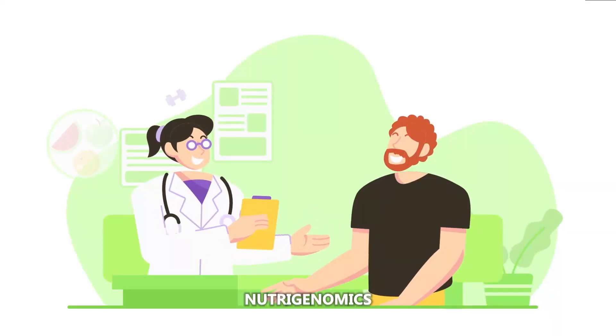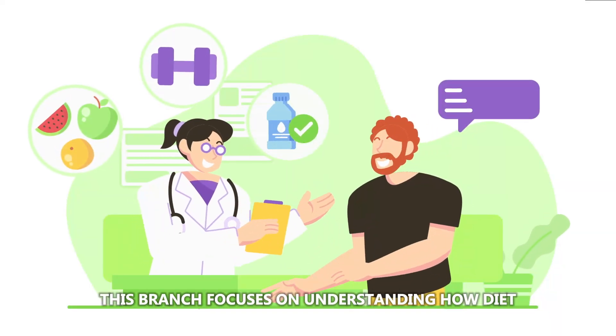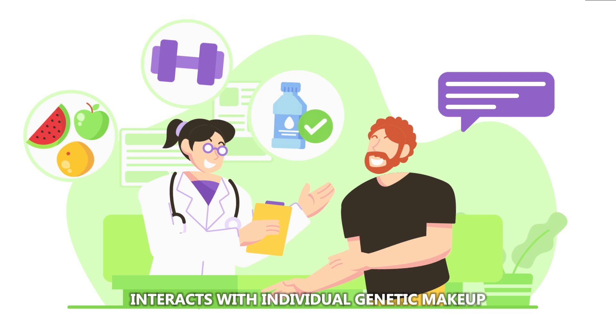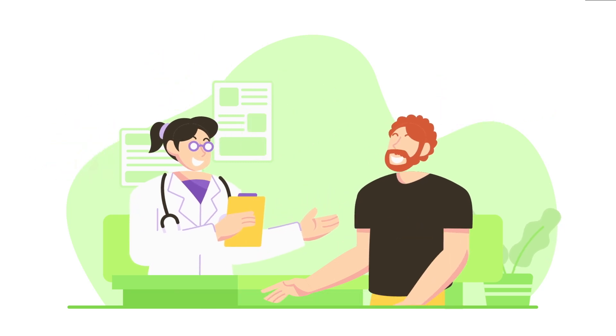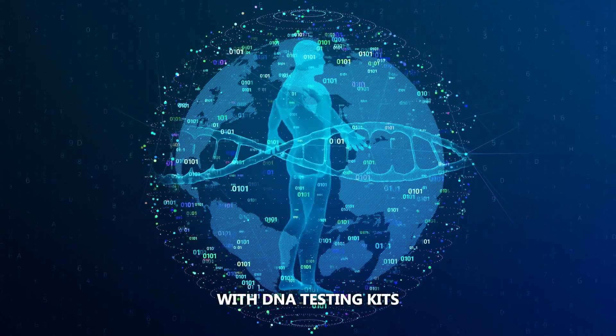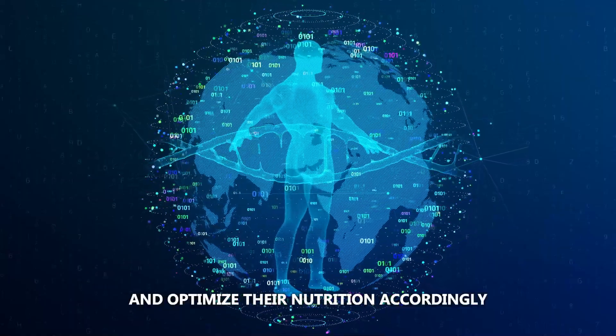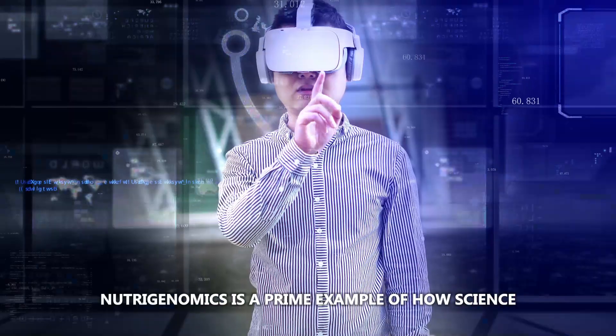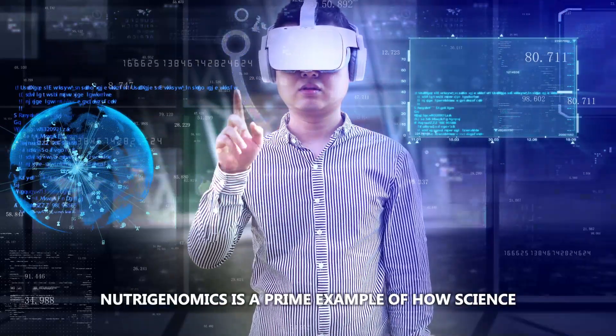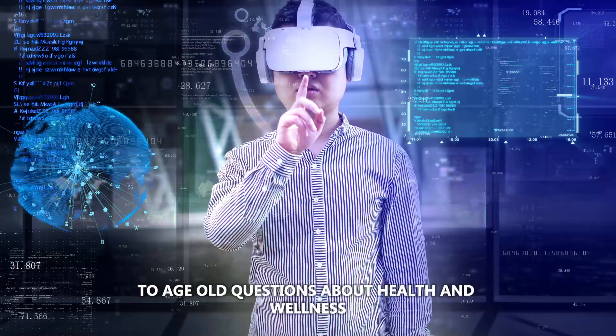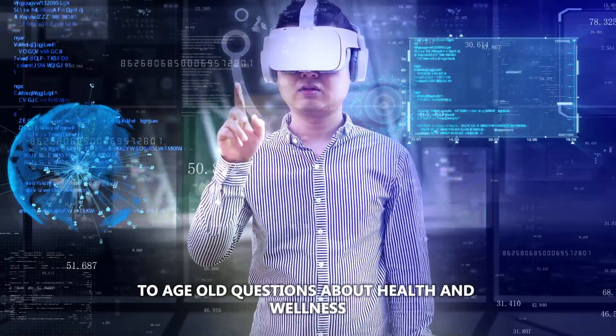Nutrigenomics – This branch focuses on understanding how diet interacts with individual genetic makeup. With DNA testing kits, people can identify genetic predispositions and optimize their nutrition accordingly. Nutrigenomics is a prime example of how science can provide personalized solutions to age-old questions about health and wellness.